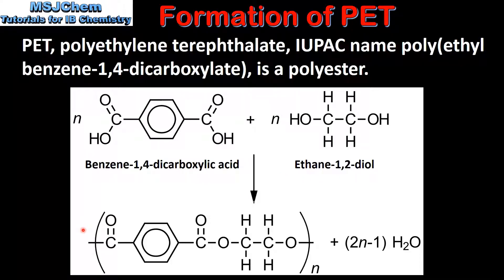Here we can see a repeating unit of the polymer formed in the reaction. An OH group on the benzene 1,4-dicarboxylic acid reacts with a hydrogen atom in one of the hydroxyl groups in ethane 1,2-diol. This forms a molecule of water and a covalent bond between the carbon and the oxygen atom. The bond formed is known as an ester link.